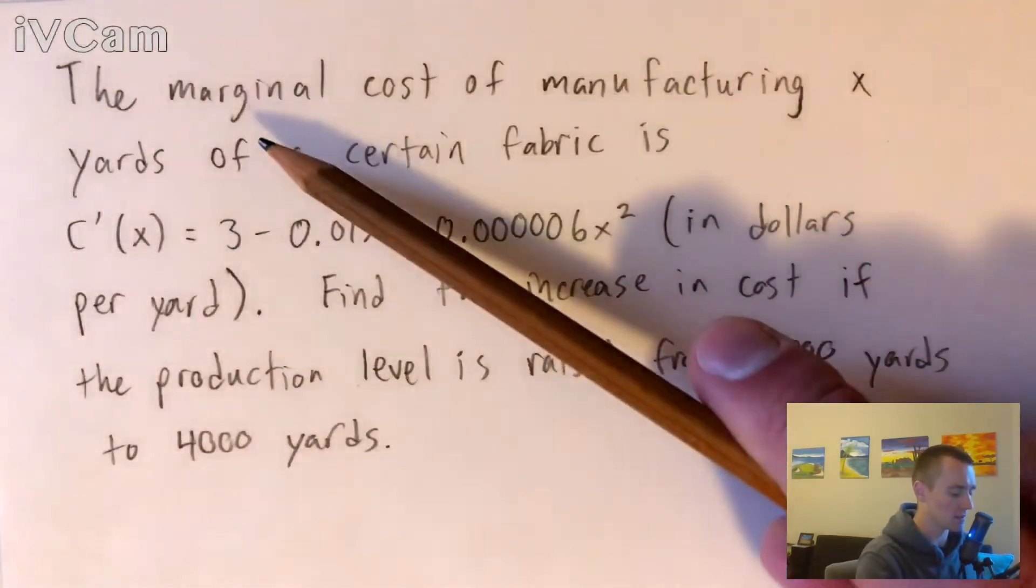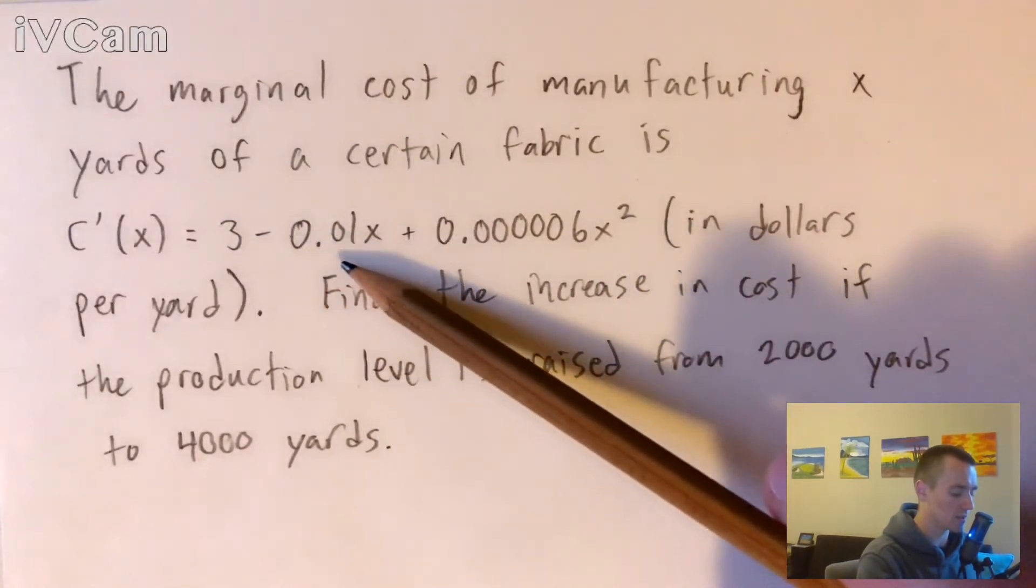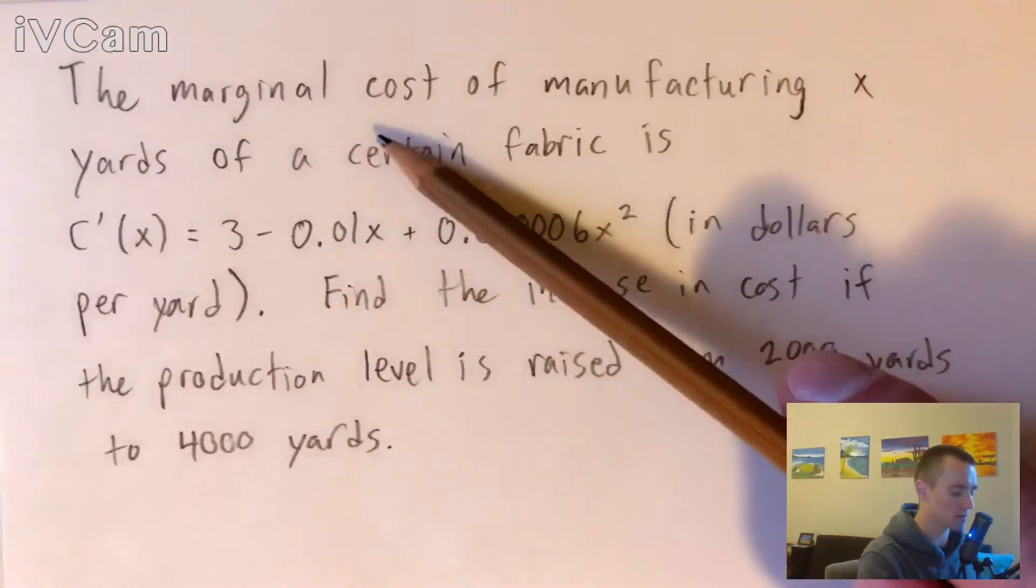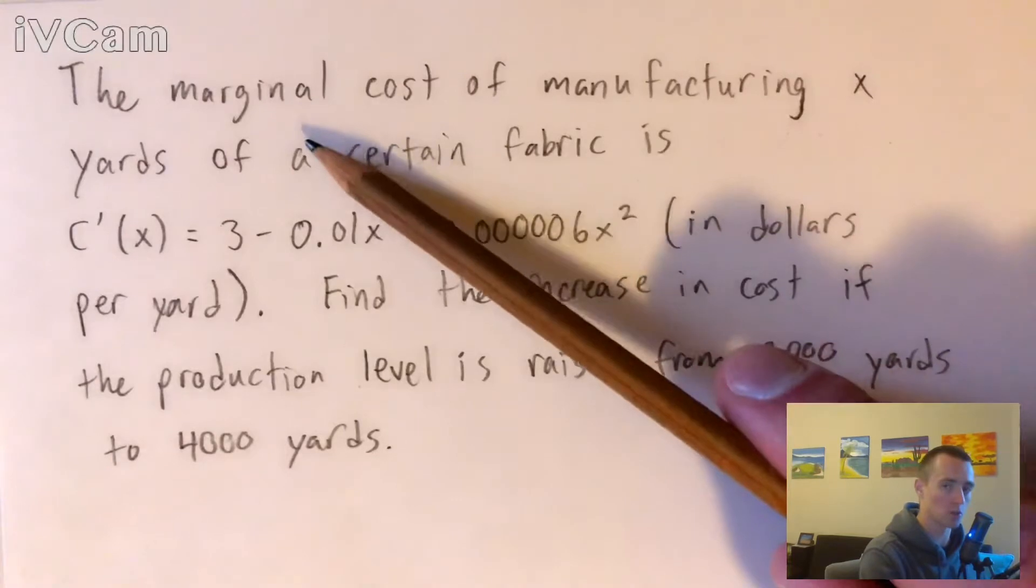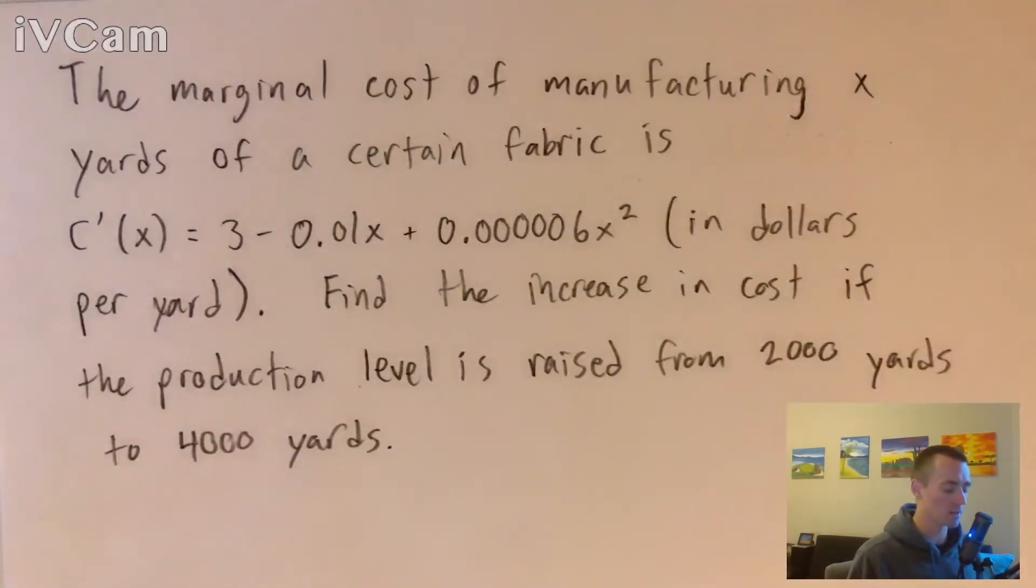What we want to consider is this function that they've given us is an equation for marginal cost. Marginal cost or marginal anything is a keyword that you want to remember, because marginal anything is the derivative of whatever that thing is.